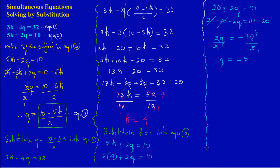There we go — we have a solution for K and for Q. Therefore, K equals 4 and Q equals negative 5. You could verify by substituting both values back into the original equations to check you get 32 for equation one and 10 for equation two, as done in the previous exercise.